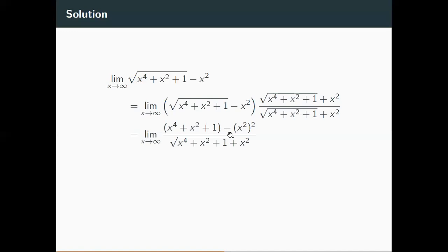And if you just have a minus sign, usually that limit is also not so bad. So if we simplify this a little bit, we get this x to the fourth subtracts out with this x to the fourth. So we're just left with x squared plus one over square root of x to the fourth plus x squared plus one plus x squared.